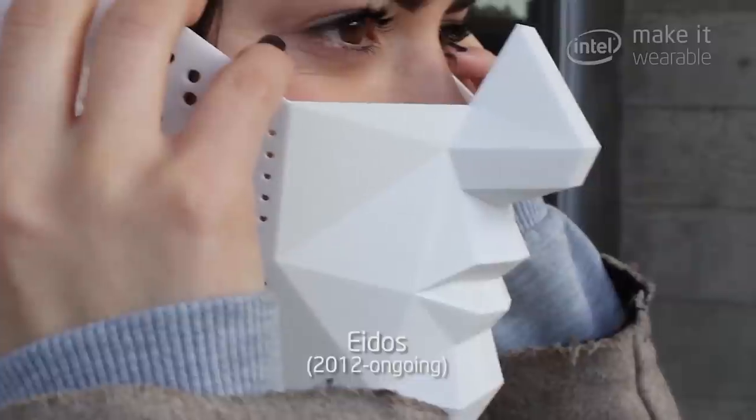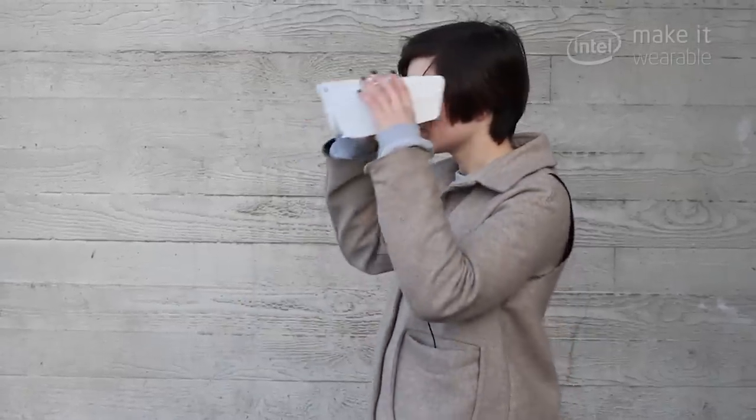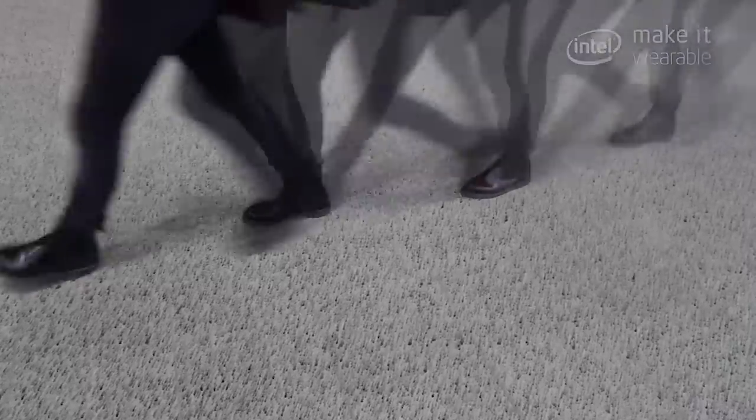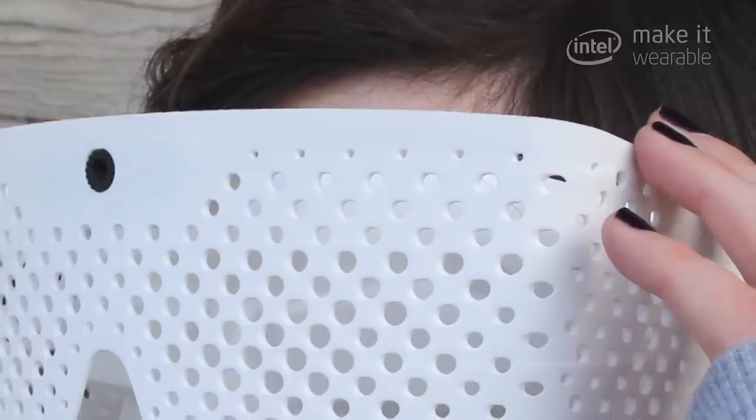Eidos consists of two masks. The first one is Eidos Vision, and that affects the way that we see motion. It enhances our perception of motion. It creates this effect where you can see the motion history and traces and patterns that are normally hidden to the naked eye.